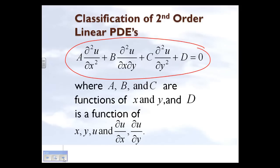A second-order linear partial differential equation has constants a, b, c, and d, where a, b, and c can be functions of the independent variables x and y only. The term d has lumped into it not only the independent variables x and y but also the dependent variable u and its first derivatives with respect to x and y.